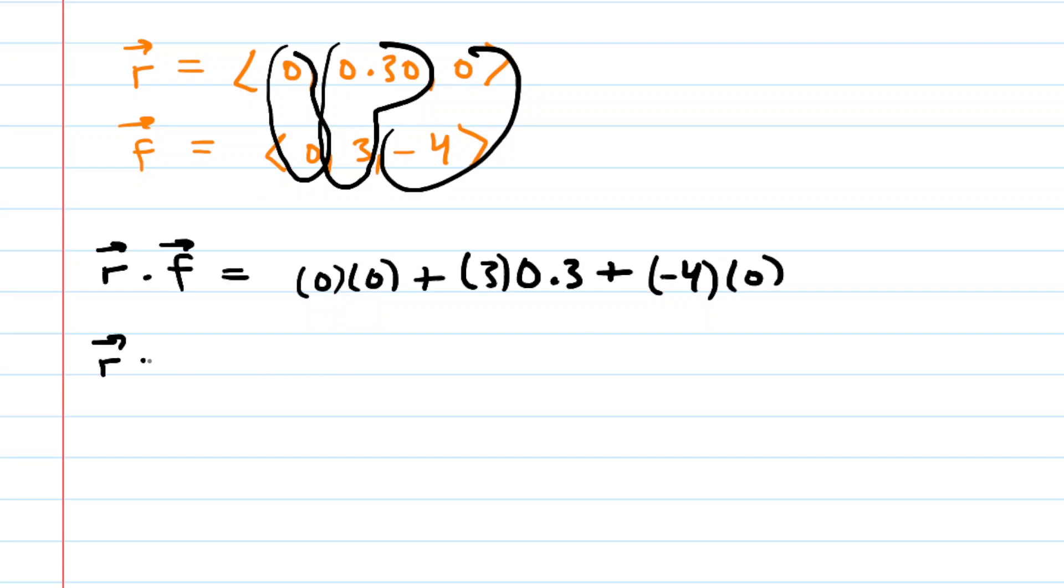Now when you simplify this, you will see that the dot product, these go to 0, is simply equal to 0.9. So that's one thing we need. We'll put a little bubble around that.